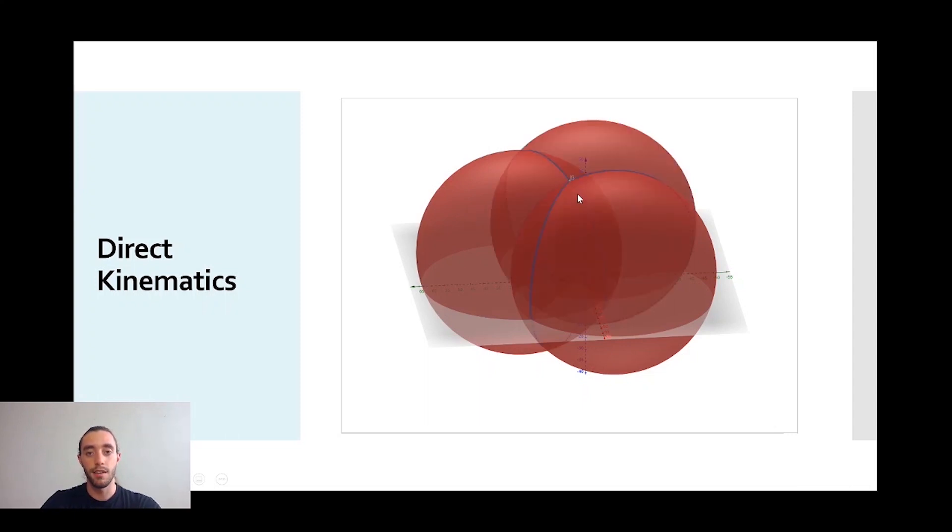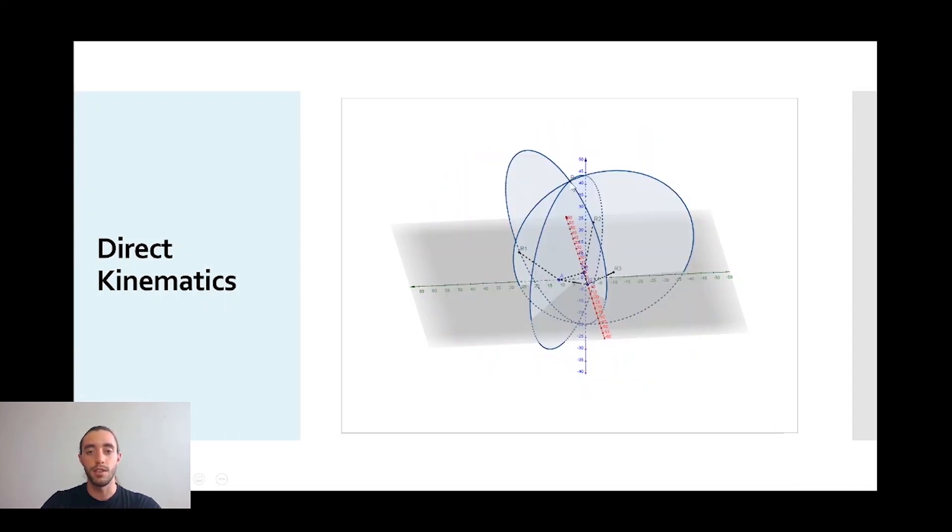As we can see here, there are two possible solutions, but the one we will choose is the one that puts the end effector platform above the base platform. So, point B.